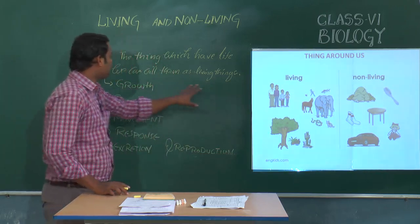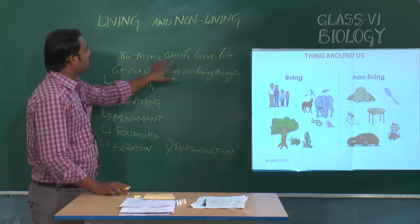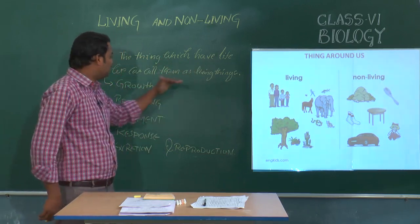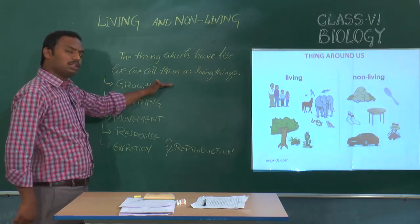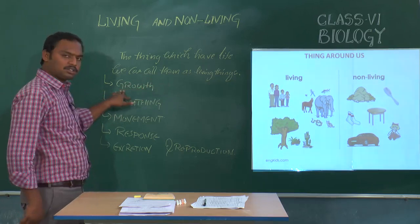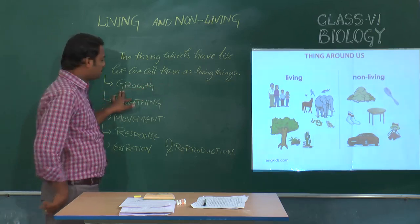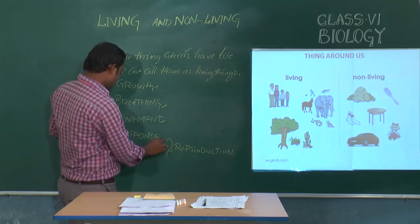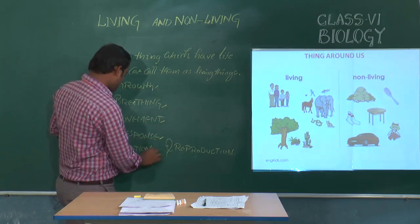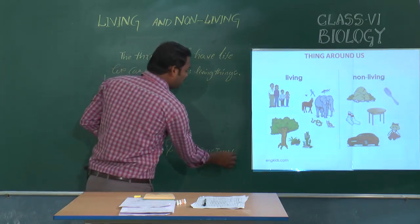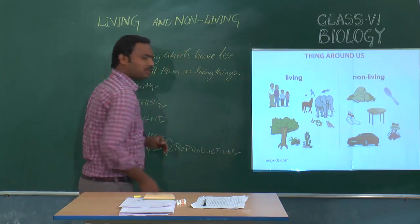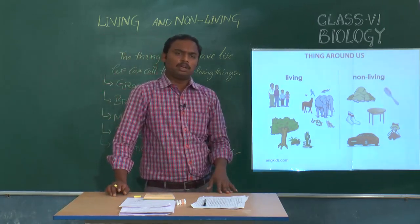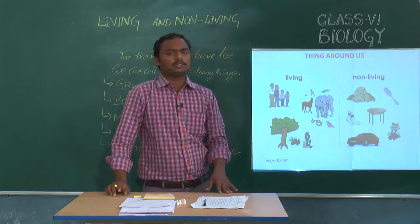Children, the things which have life we can call them as living things. Living things possess these characteristic features like growth, breathing, movement, response, excretion, and reproduction. These are some of the characteristic features of living things.